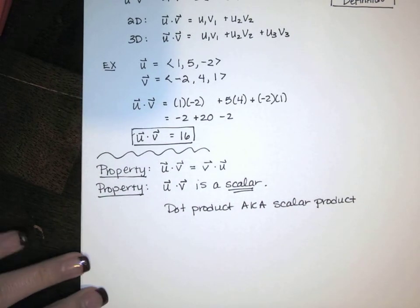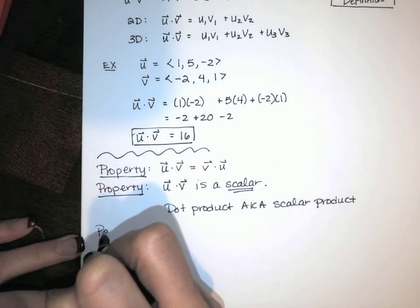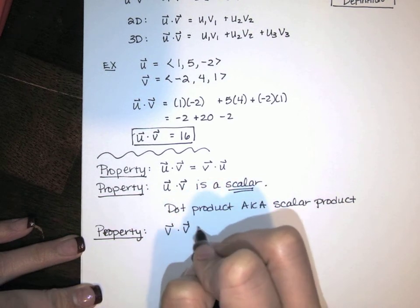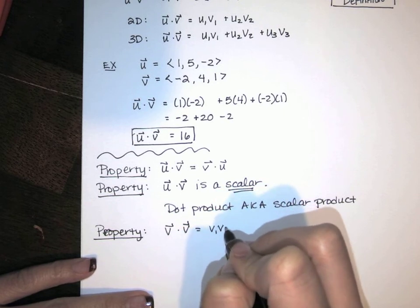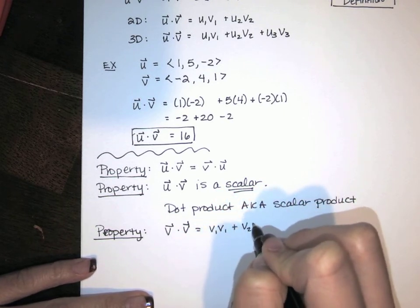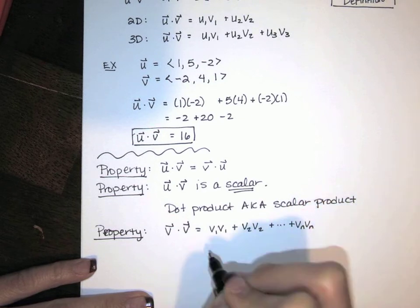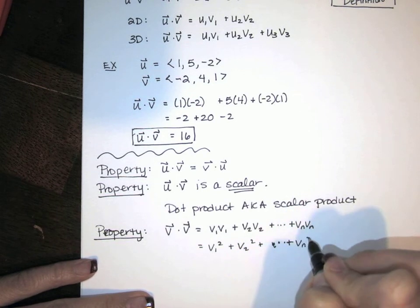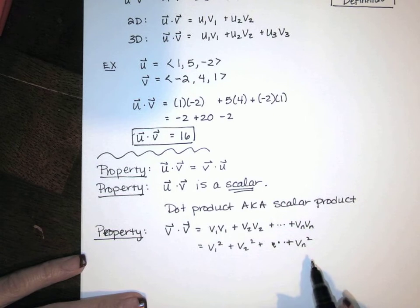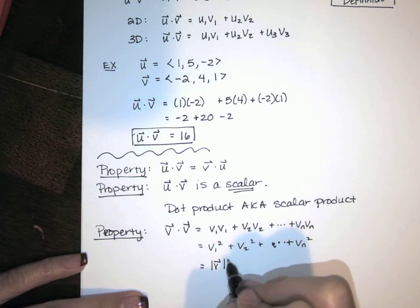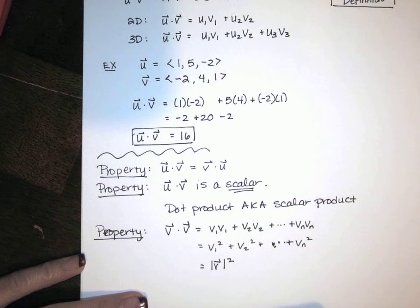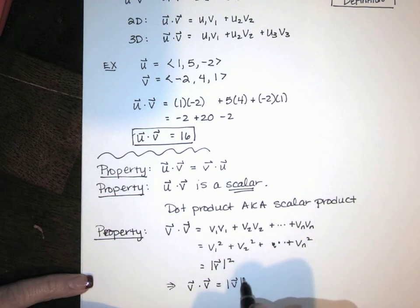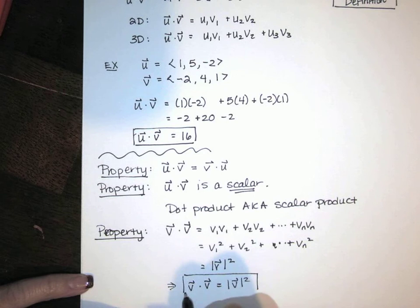If we take the same vector twice — v dotted with v — according to the definition that's v1*v1 plus v2*v2, all the way through v_n*v_n, which equals v1 squared plus v2 squared plus v_n squared. That's just the length of v squared. So v dotted with v equals the magnitude of v squared. That's an important property.